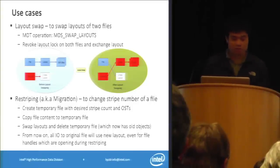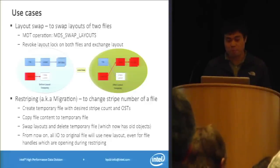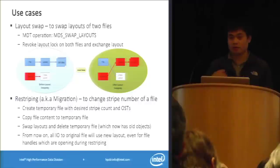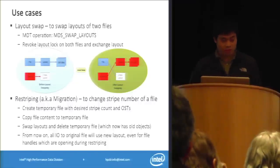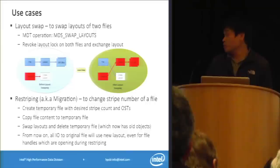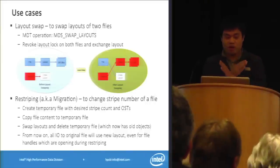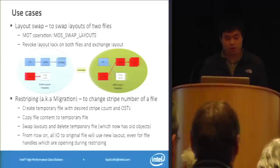Now I'll cover some use cases of layout lock. This is pretty important as we are going to add a lot of data placement features into Lustre 2.5 and 2.6. The first use case is layout swap, which is an MDT operation to swap the layout between two files. We usually use this to change the layout of a file.